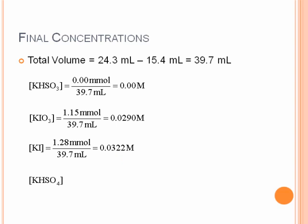Last but certainly not least, the KHSO4, the other product, we found that we formed 3.85 millimoles of that divided by the total volume of 39.7 milliliters. We found that we get 0.0970 molar.